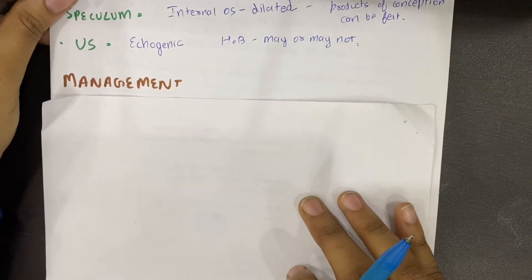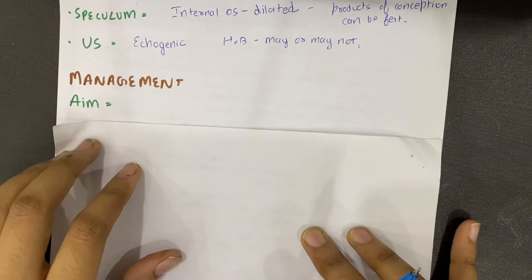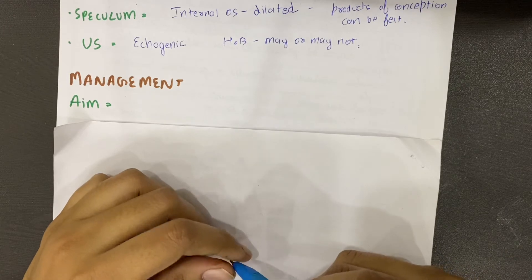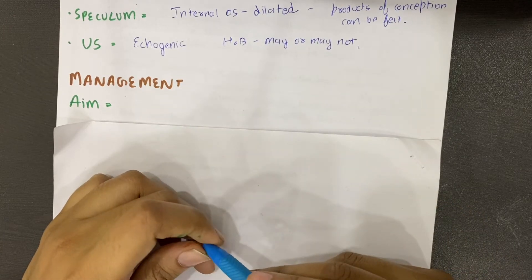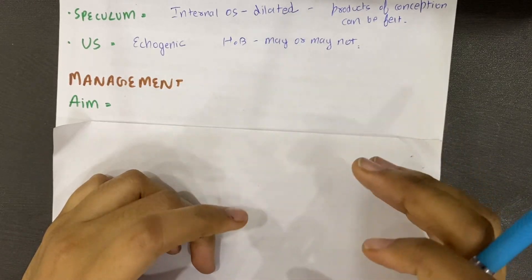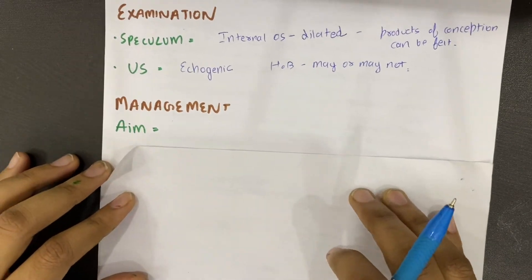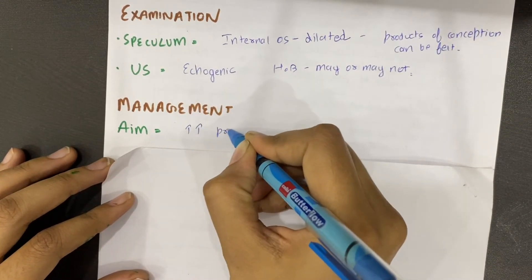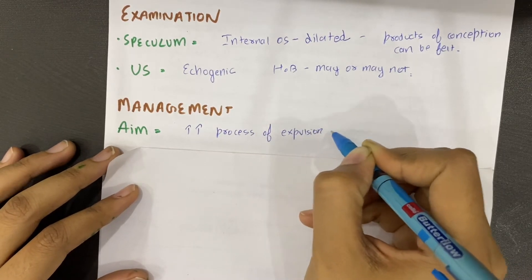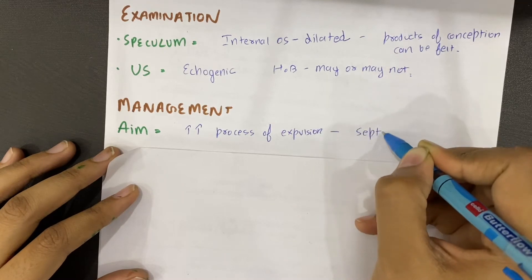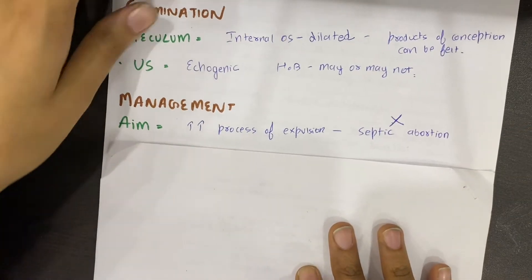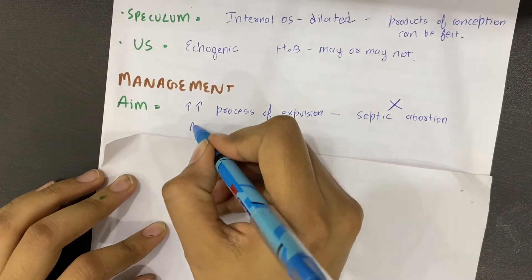Now comes management. First of all, we have to learn the aim of management — if we know the aim, management is very easy to understand. In inevitable miscarriage, since continuation of pregnancy is impossible, our aim will be to accelerate the process of expression so that the condition does not progress to septic abortion, which can be fatal to the mother. We must also maintain strict asepsis.